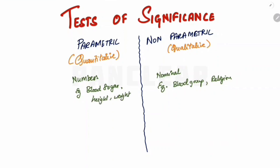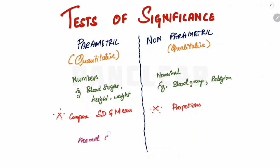The next important point: in parametric tests, we are going to compare standard deviations or means. Whereas in non-parametric tests, we are going to compare proportions or medians. Proportions are essentially percentages. Also, parametric tests use a normal distribution curve, whereas for skewed distributions we use non-parametric tests.